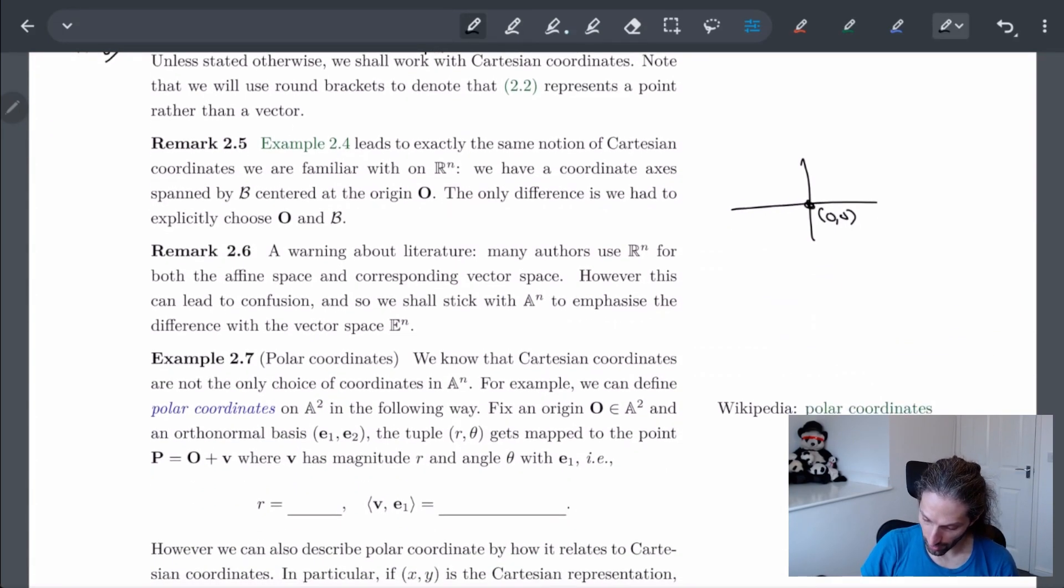Now also a little remark: if you are following along in other books, a lot of authors will use ℝⁿ instead of 𝔸ⁿ, and the reason why is because of this whole Cartesian system, right?